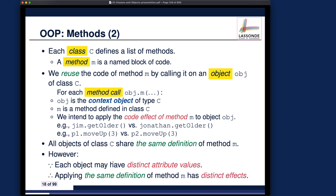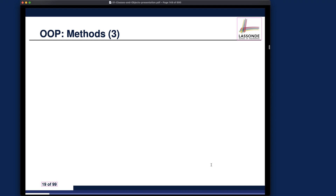We also talk about how each object may have distinct attribute values. For example, if you have two person objects, both may have the same attribute age, but the age attribute value might be different. You will see that over and over in the examples.